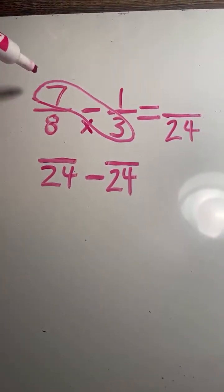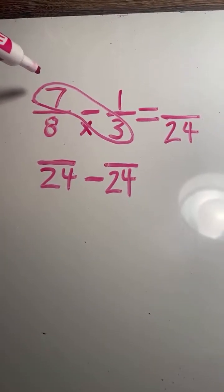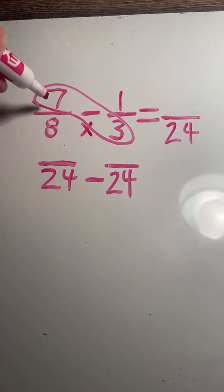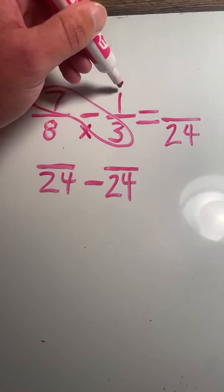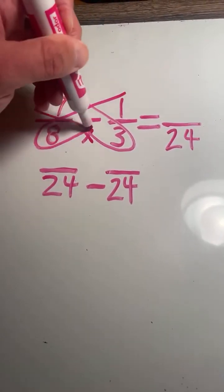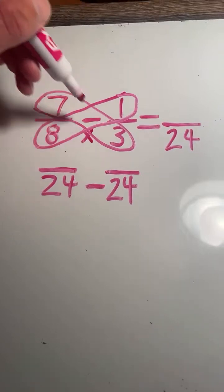Next we have to multiply each numerator by the opposite denominator. So the 7 in 7 eighths, we multiply that times 3. The 1 in 1 third, we multiply that times 8. So 7 times 3.